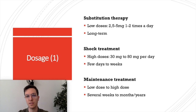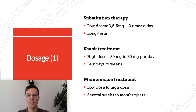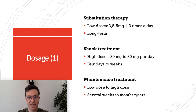To determine the correct dose, it's important to know the indication. For substitution therapy in someone who does not produce their own cortisol, give low doses of 2.5 to 5 mg once or twice daily long-term. For acute shock treatment such as asthma or COPD exacerbations, give high dosages of 30 to 80 mg per day divided over one to four doses for a few days to a few weeks.